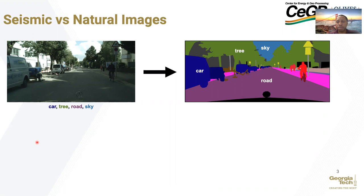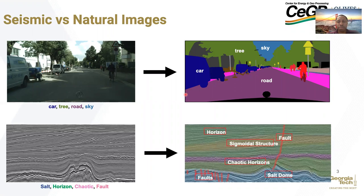Another motivation is the difference between natural images and seismic images. Natural images have a distinct boundary in their localization compared with seismic images. For instance, the boundary of a car is nicely delineated. However, in seismic images, the boundary between seismic facies is not clear and distinct. As such, domain expertise knowledge is required in seismic labeling and annotation, which is another reason why self-supervised learning is motivated here.